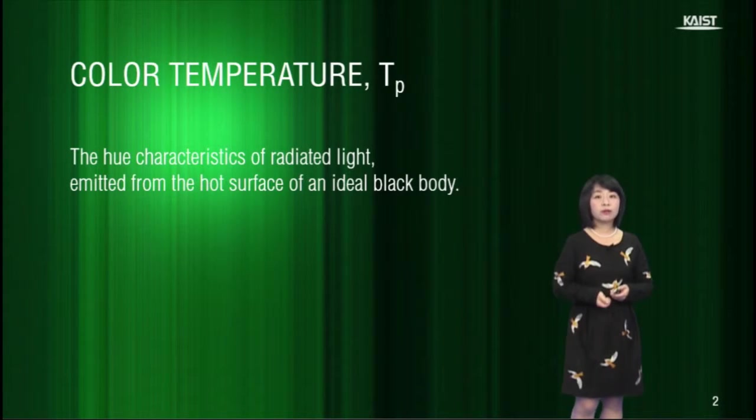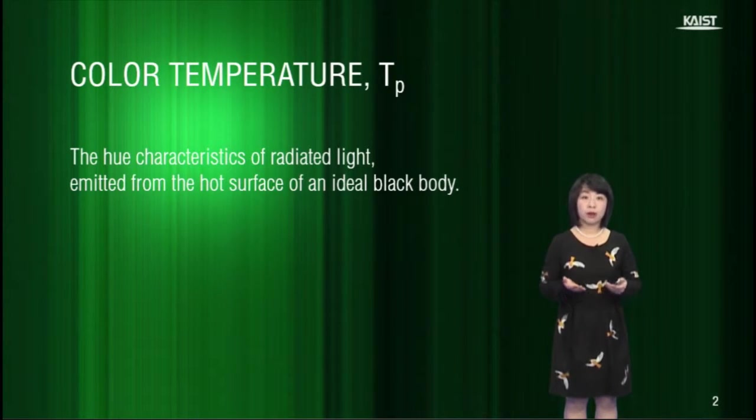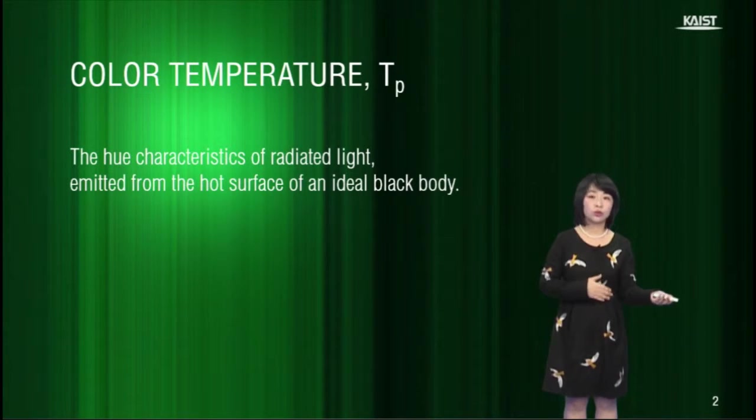When the surface of an object becomes very, very hot, it starts to radiate light. And depending on how hot it is, the hue of light changes from orange to blue.